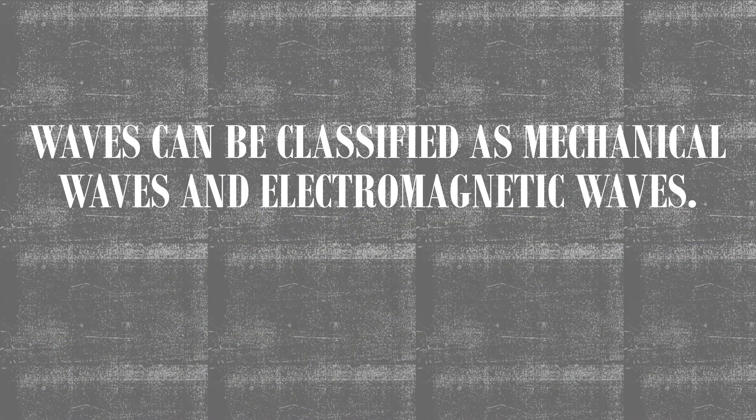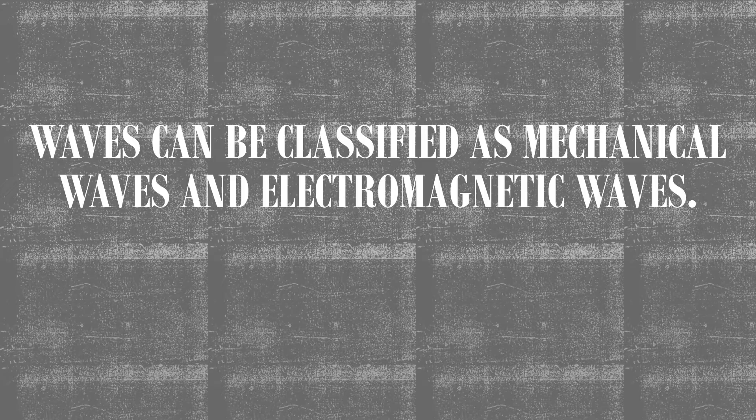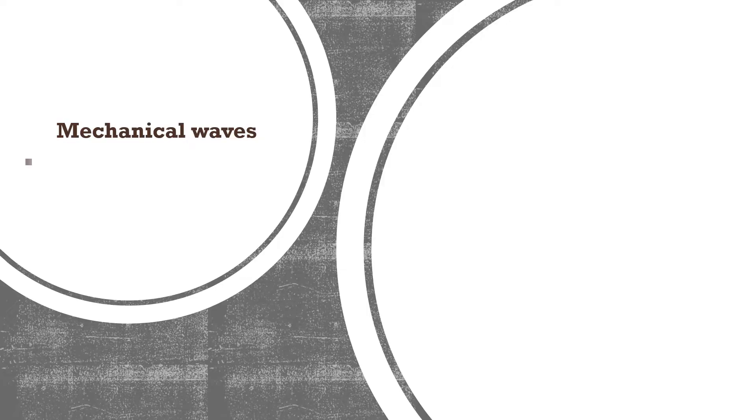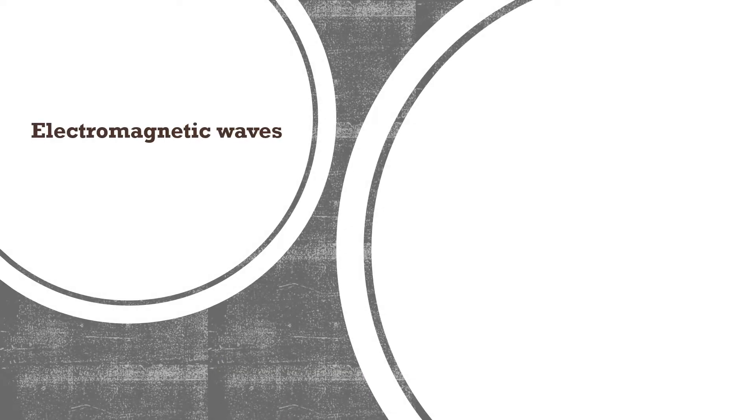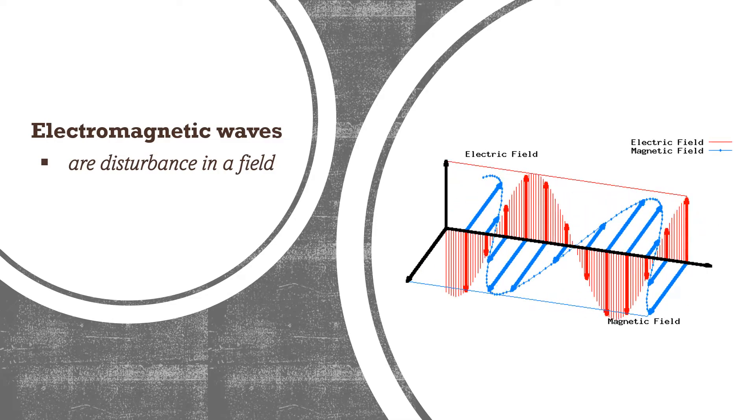Waves can be classified as mechanical waves and electromagnetic waves. Mechanical waves are disturbance in a medium. Examples are water waves, sound waves, stadium waves, and seismic waves. While, electromagnetic waves are disturbance in a field.